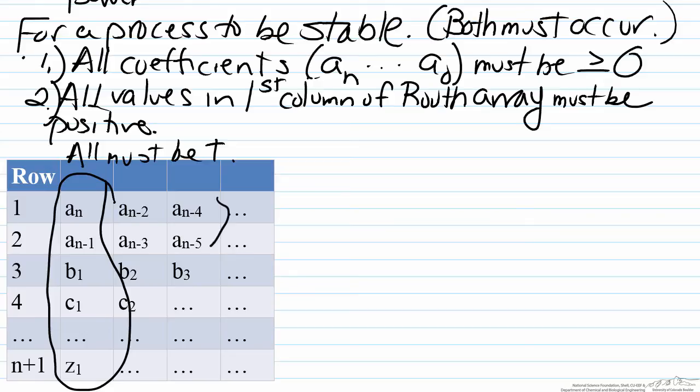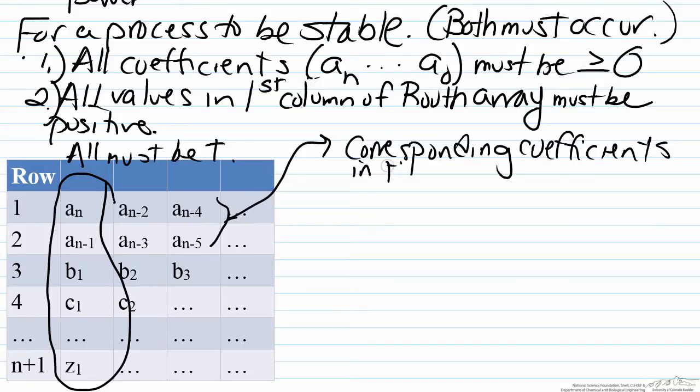You'll notice that the first two rows are a's. These a's are the corresponding coefficients in the characteristic equation. You start with the value that comes in front of the largest power of s, and you work in this up-down zigzag formation going from a_n to a_{n-1} in this type of fashion until you run out of values.